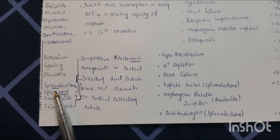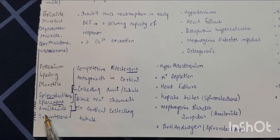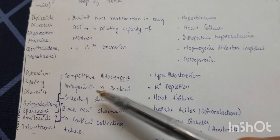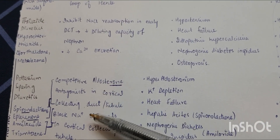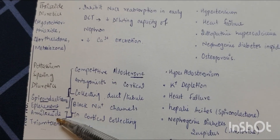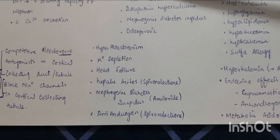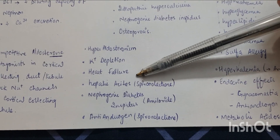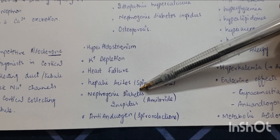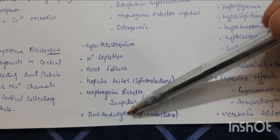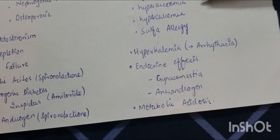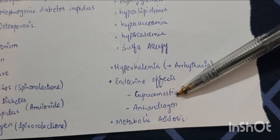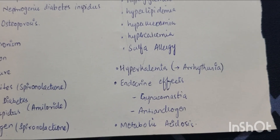Potassium-sparing diuretics include spironolactone, eplerenone, amiloride, and triamterene. Spironolactone — since both 'spironolactone' and 'aldosterone' contain 'rone' — is a competitive aldosterone antagonist in the cortical collecting duct. Amiloride and triamterene block sodium channels in the cortical collecting duct. Clinical uses include hyperaldosteronism, potassium depletion, heart failure, hepatic ascites (spironolactone is drug of choice), nephrogenic diabetes insipidus (amiloride is drug of choice), and antiandrogen therapy (spironolactone). Adverse effects include hyperkalemia causing arrhythmias, endocrine effects such as gynecomastia, antiandrogen effects, and metabolic acidosis.